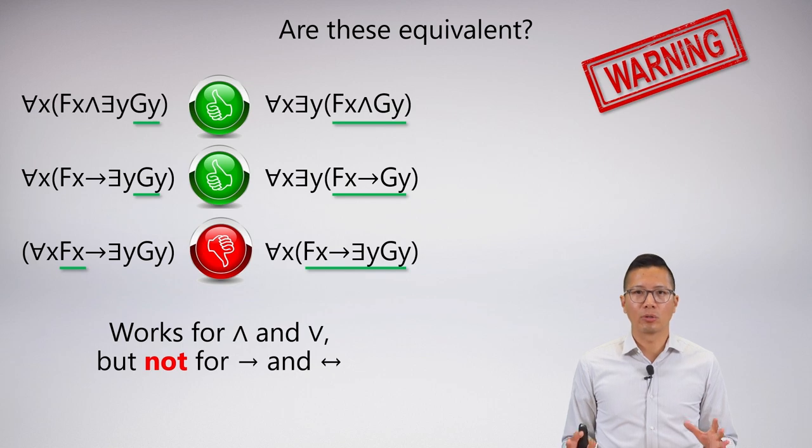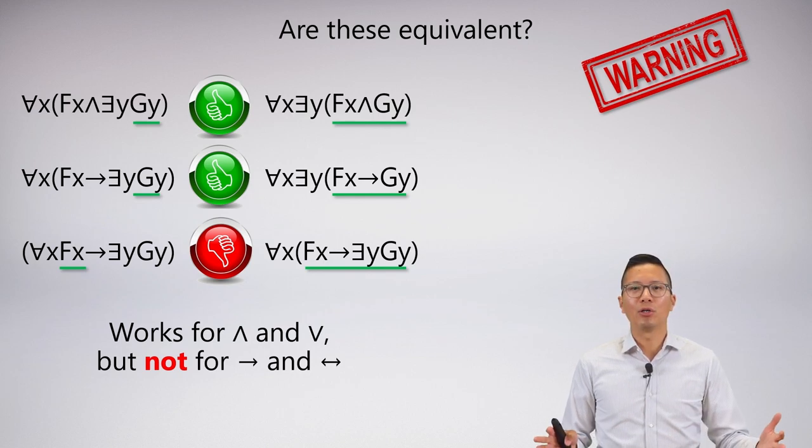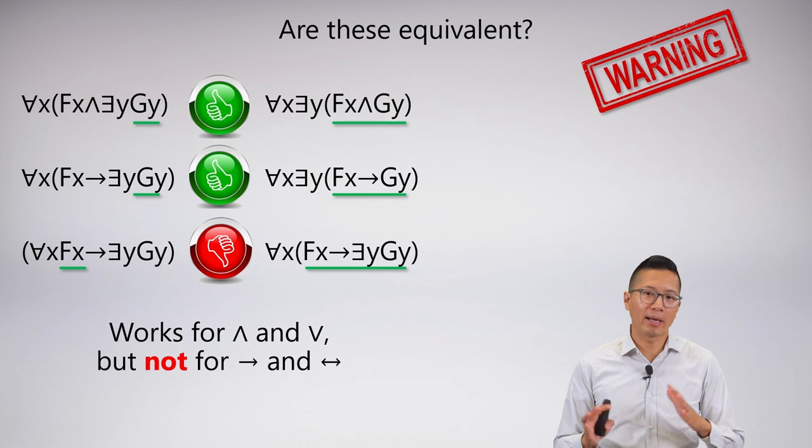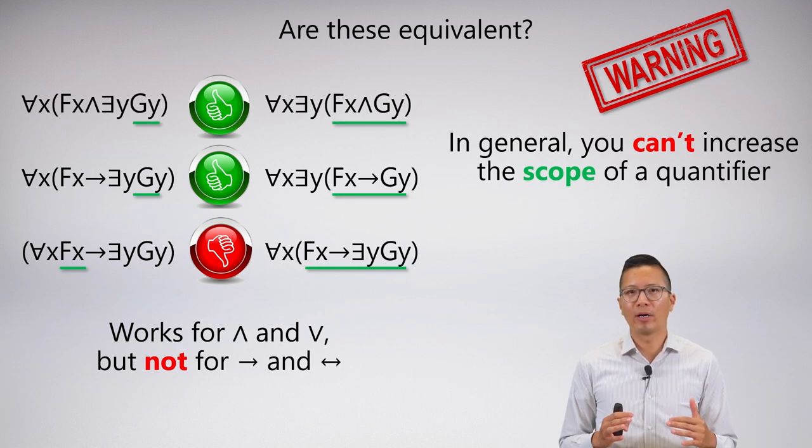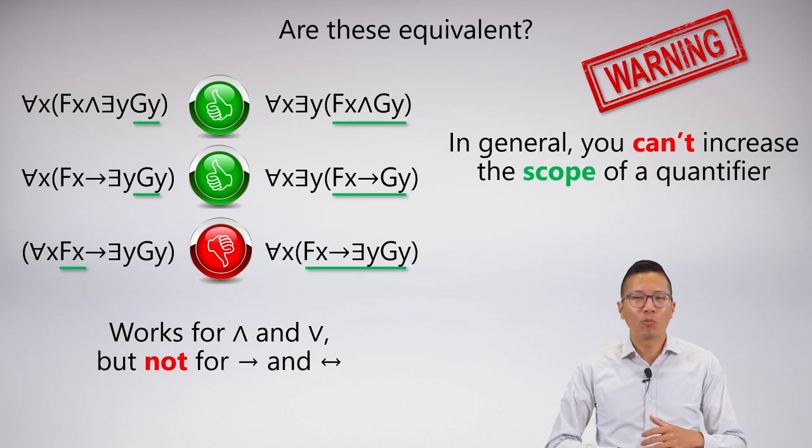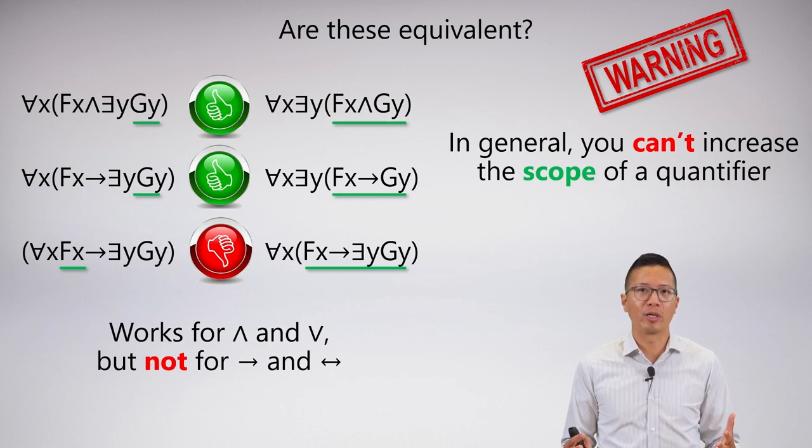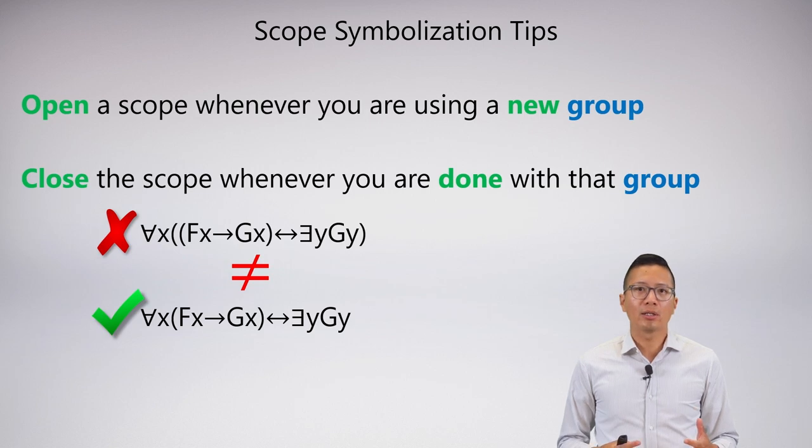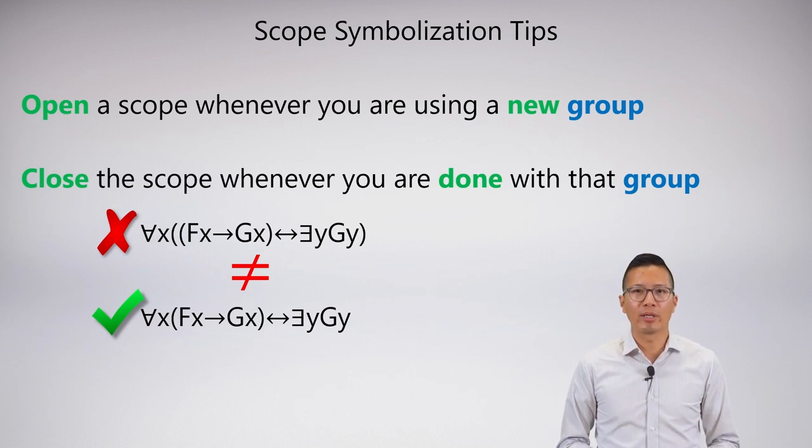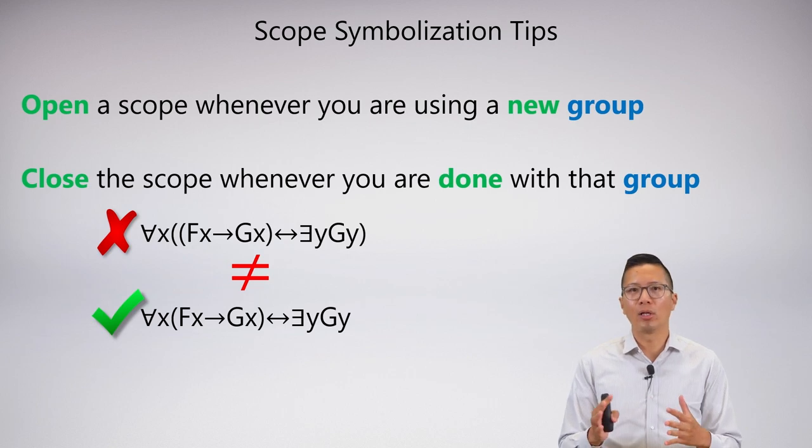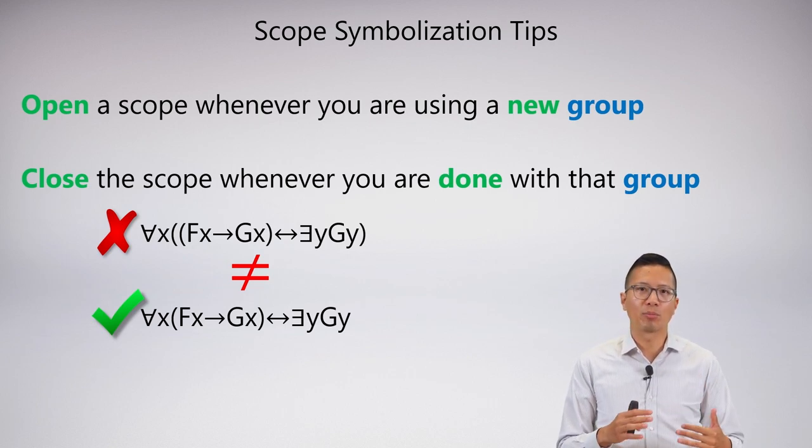So in general, if you really care about this sort of thing, you can remember that pulling quantifiers out to increase the scope range works for and and or. But you're going to have problems for the conditionals and the bi-conditionals, bi-conditionals for sure. And in general, you just can't really increase the scope of a quantifier. So this sort of matters because some people will want to put the quantifiers all at the front thinking it won't impact their sentence. But it turns out that it does in conditional cases. So you don't really want to have to worry about this, and the best thing is to just not worry about this by not doing it. Fortunately, the scope symbolization tips that I taught you, where you open a scope wherever you use a new group and you close the scope whenever you are done with that group, make it so that you don't actually fall into this trap. How we've been symbolizing all along avoids the problems that I just talked about.